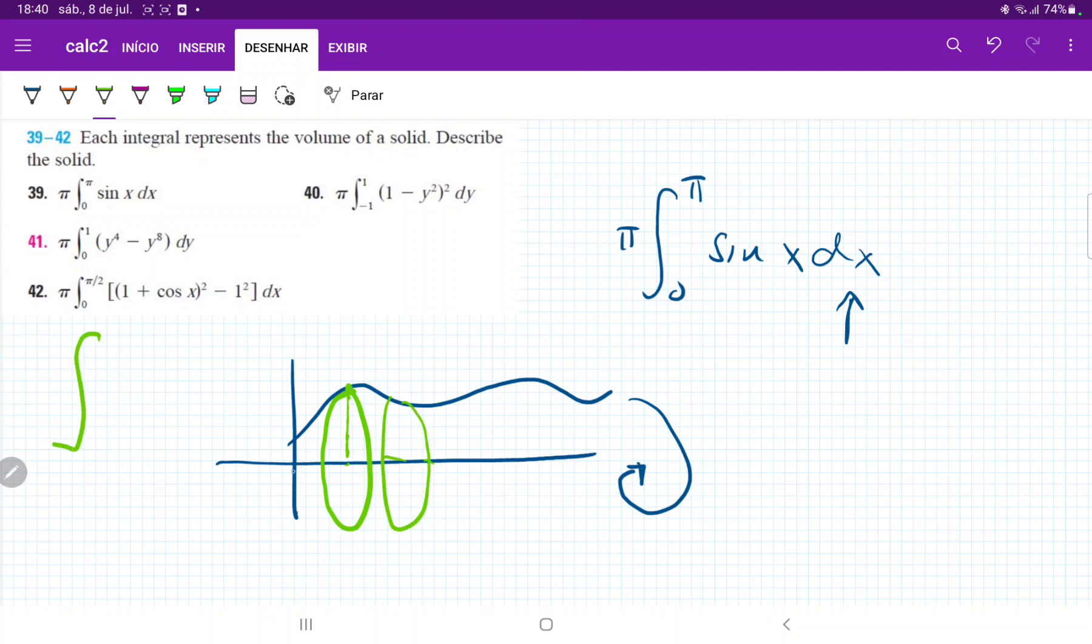So this is the integral, let's say from a to b, from a to b of π r squared, where r is the f of x. So π f of x, f of x squared dx. So that's really the integral when we take it and we sum it up across like so.